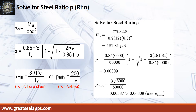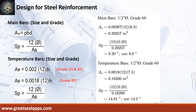The beam design ratio RN equals 181.81 PSI, and reinforcement ratio rho equals 0.00309. Use rho minimum of 0.00387. Given rho equals 0.00387, b equals 12 inches, and d equals 6.3 inches.